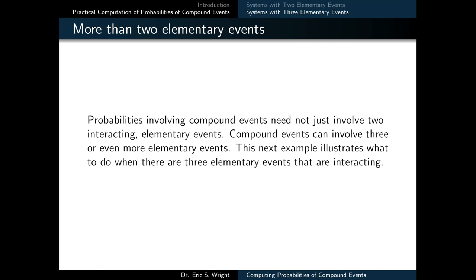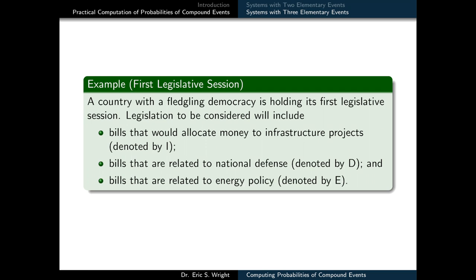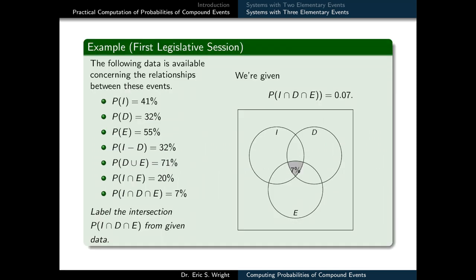Probabilities involving compound events need not just involve two interacting elementary events — they can involve three or even more. The next example involves a country with a fledgling democracy holding its first legislative session. Legislation will include bills related to infrastructure projects (event I), national defense (event D), and energy policy (event E). The given data includes: P(I) = 41%, P(D) = 32%, P(E) = 55%.